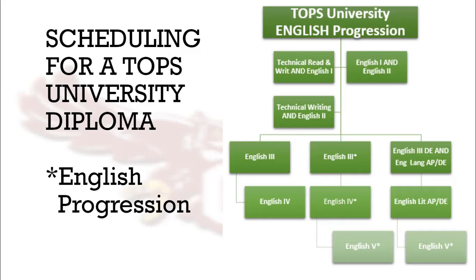Those students who took Technical Reading and Writing in English 1 will then go on to Technical Writing in English 2 in the 10th grade. Those 9th graders who had English 1 and English 2 in 9th grade will then determine whether they want to take English 3, English 3 Asterisk, or English 3 Dual Enrollment in English Language AP. After English 3, students will then determine which English 4 course to take, and those students who still have room for another English their senior year can choose to take English 5.